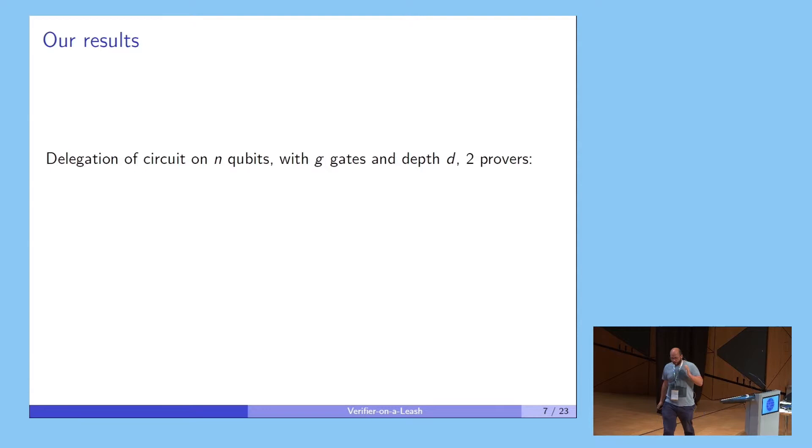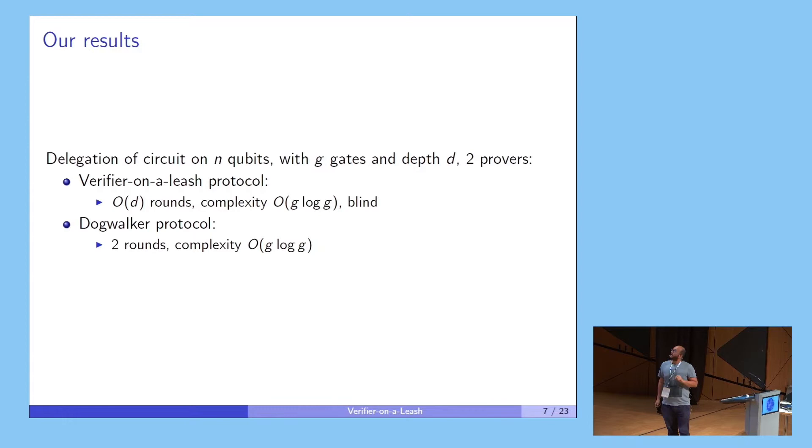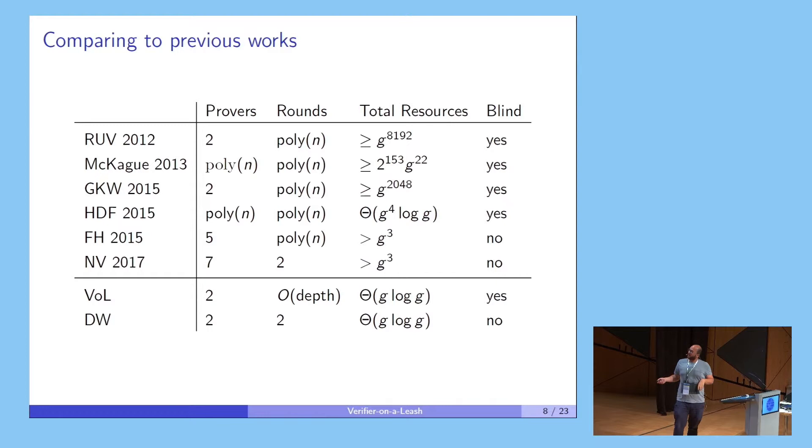In our work, we're dealing with delegation of quantum computation on N qubits, G gates, and these gates are on a circuit with depth D. We were able to devise two protocols. In the first one, in both of them, the complexity is G log G, so it's almost optimal - we cannot do better than order of G. In the first protocol, the number of rounds is linear on the depth of the circuit, but it's blind. And then we can reduce the rounds of communication in the protocol to constant, but at the cost of losing blindness. Comparing to the previous results, we have a very good improvement from them.